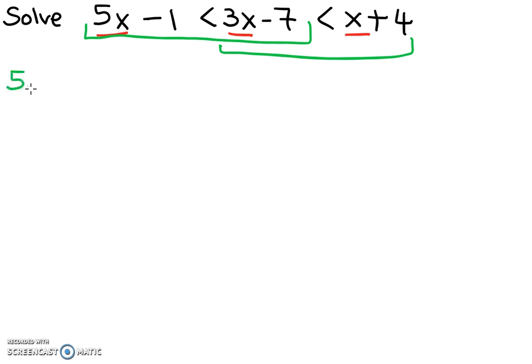So the first inequality, we have 5x minus 1 less than 3x minus 7.